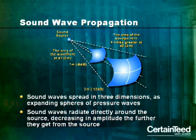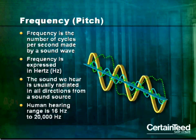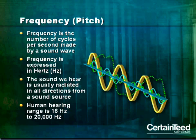As sound travels away from the source, the sound energy is reduced by half as the distance doubles. In this case, the sound diminishes by six decibels at one meter, and then by twelve decibels at two meters. Frequency is one property of sound. This can also be referred to as pitch. Frequency is the number of cycles per second produced by a sound wave. It's expressed in hertz, and the sound we hear is radiated in all directions from a sound source. The human hearing range is 16 hertz to 20,000 hertz.